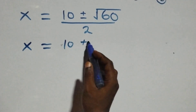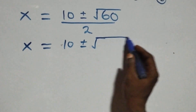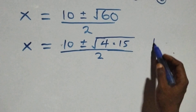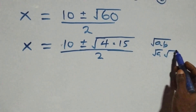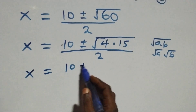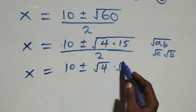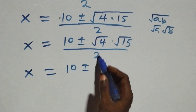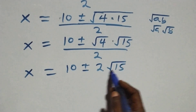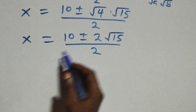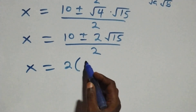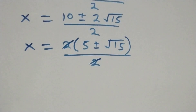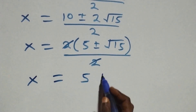Now, square root of sixty can be expressed as square root of four times fifteen. Applying the product rule for radicals, this is root four times root fifteen. Root four is two, so we have x equals ten plus or minus two root fifteen, all over two. Factoring out two from the numerator, we get x equals two times bracket five plus or minus root fifteen, all over two. The two cancels, giving x equals five plus or minus root fifteen.